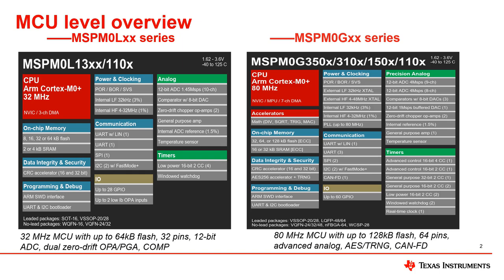Our DMA module can support up to 16 independent channels. For current release devices, MSPM013XX family has 3 DMA channels, and MSPM0G315X families has 7 DMA channels. Each channel is dedicated to manage memory access requests from one or more peripherals.